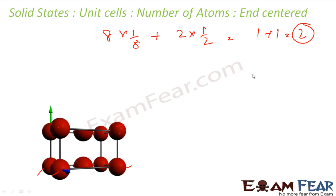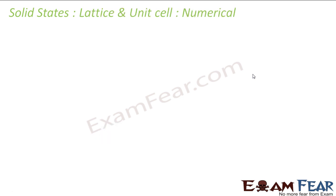Please remember — this is pretty critical for solving numericals. Simple cubic: one atom per unit cell. Body-centered: two atoms per unit cell. Face-centered: four atoms per unit cell. End-centered: two atoms per unit cell. You don't actually need to memorize — if you remember the figure, you can calculate on the spot in seconds.